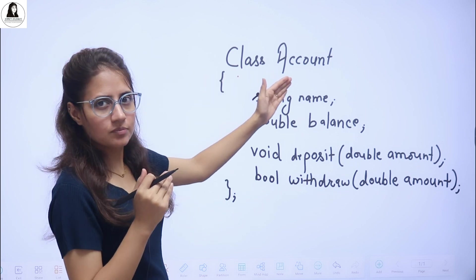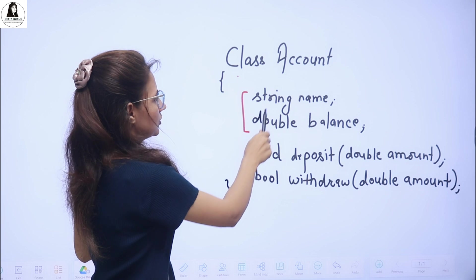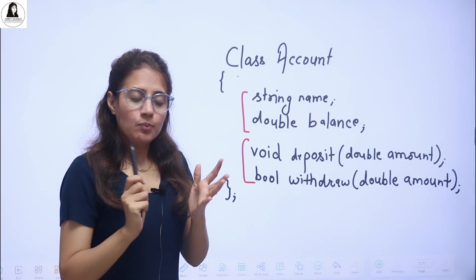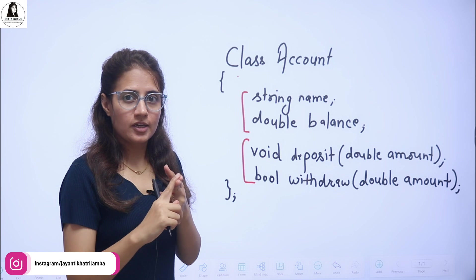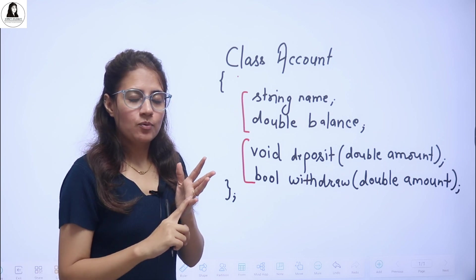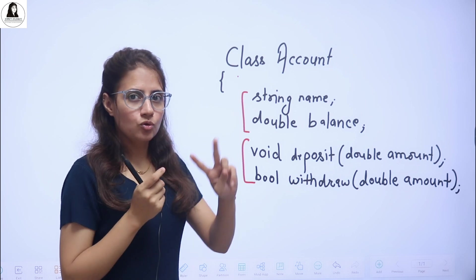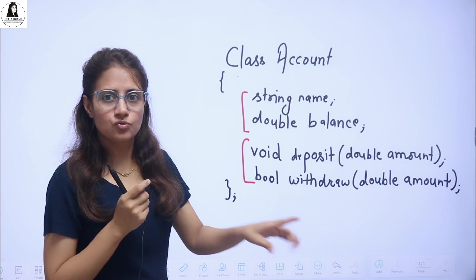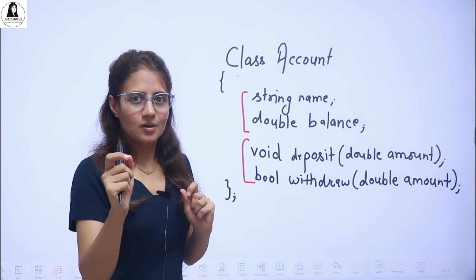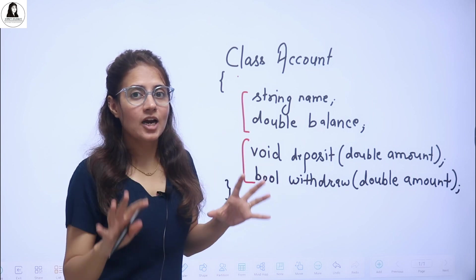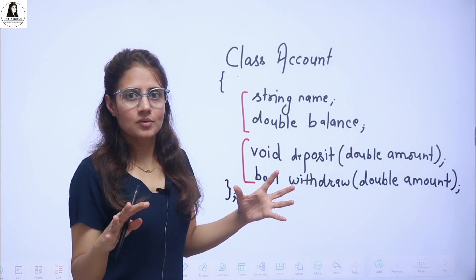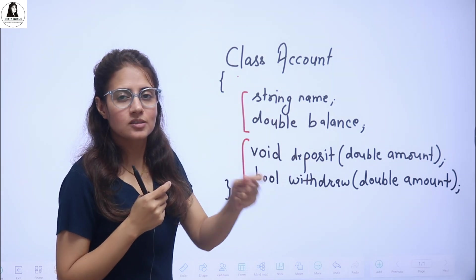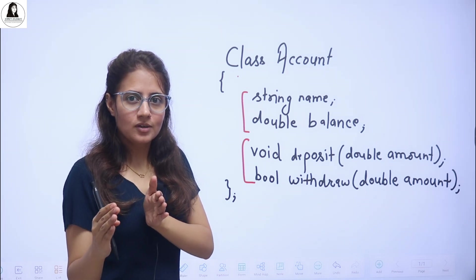We'll take this example — an Account class with two attributes, string name and balance, and two methods. We will create objects with the help of the new keyword as well as without the new keyword. One way is creating pointer to object using new. We will discuss both ways and how to access these attributes and methods. This video will be a bit lengthy — we will debug the program step by step to clearly see how values are assigned with the help of objects.